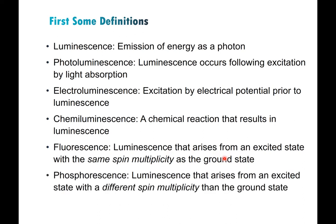Phosphorescence is luminescence that involves a change in spin multiplicity. The excited state you're luminescing from has a different spin than the ground state you're returning to. The most common case is triplet to singlet, but it could also be doublet to quartet — it's any time there are two different spin states involved. Whether the spin states are the same or different designates fluorescence versus phosphorescence.